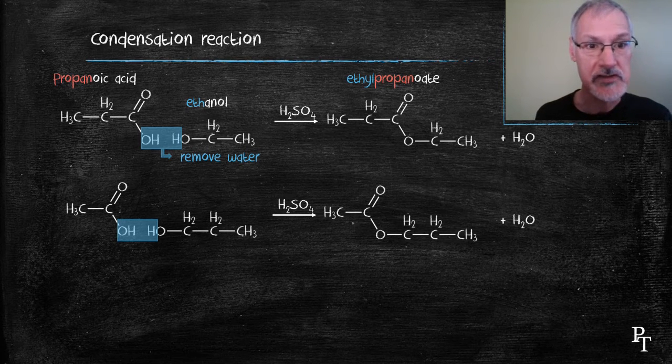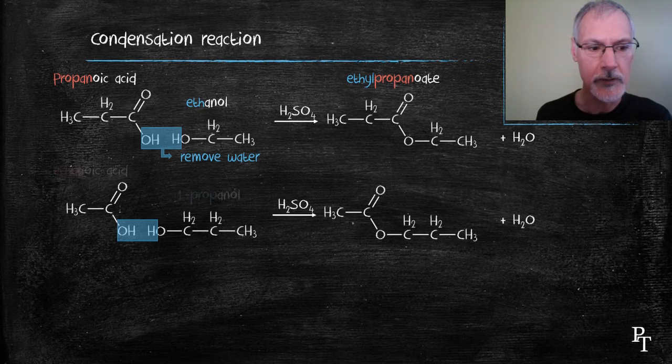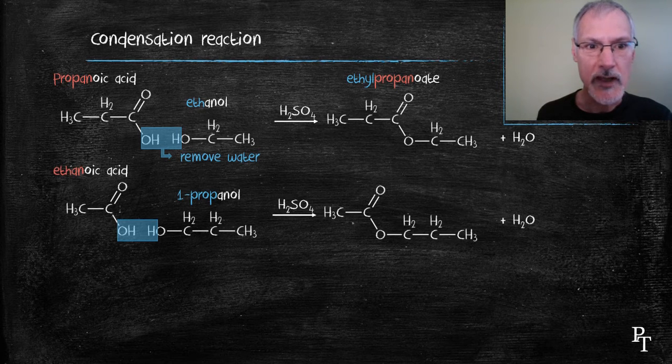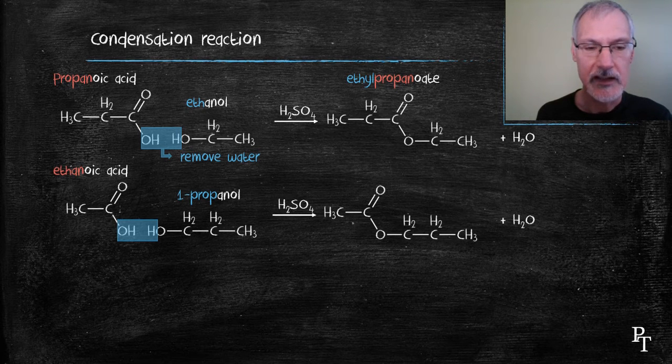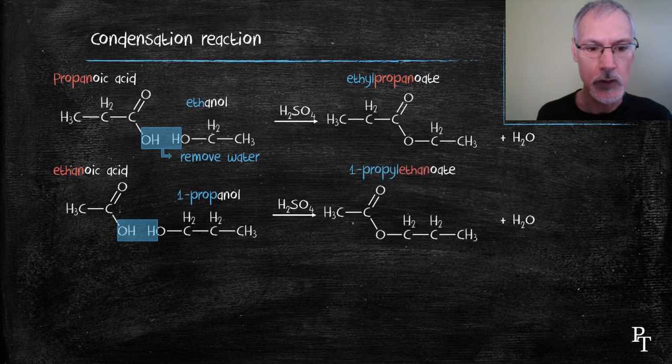In my second molecule, I used ethanoic acid and one propanol. Hence, the name of the oate should be ethanoate and the name of the attached group one propyl.